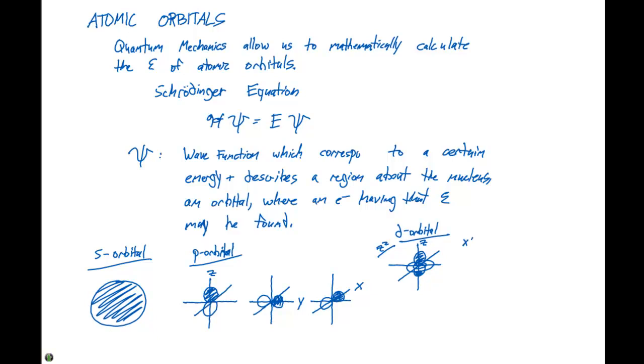The dx²-y² orbital falls along the X and Y axes. It has figure-eight orbital lobes, with every other one shaded in.